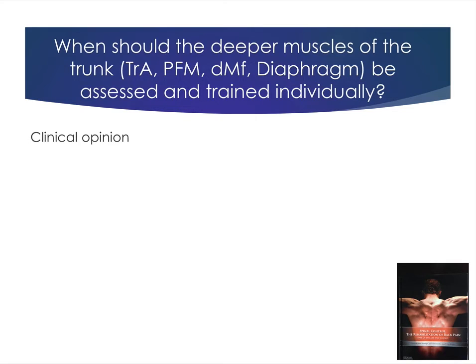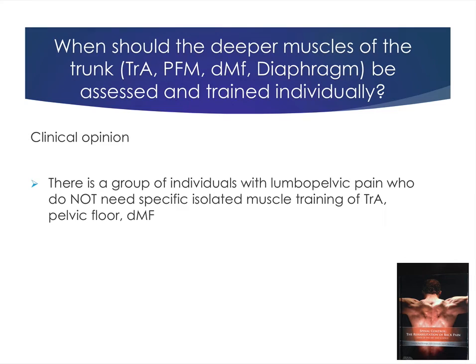So if we think that this is important for force closure and controlling movement of the sacroiliac joint, then I really need to go after what is causing this twist in her thorax. So when should we be training the deeper muscles of the trunk — transversus, pelvic floor, deep fibers of multifidus, and your diaphragm? When should they be assessed and trained individually? There are a group of individuals with lumbopelvic pain who do not need to do specific isolated training.